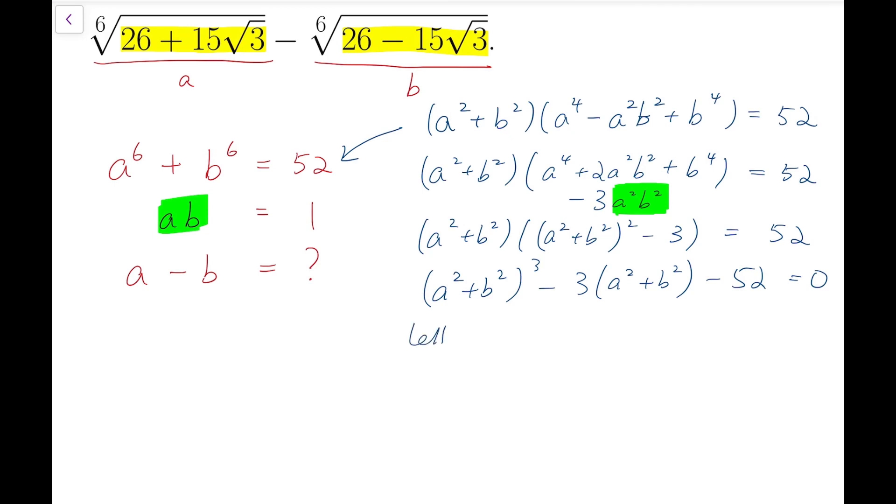By letting x equals A² + B², then we'll have a cubic equation about x, which is x³ - 3x - 52 = 0.